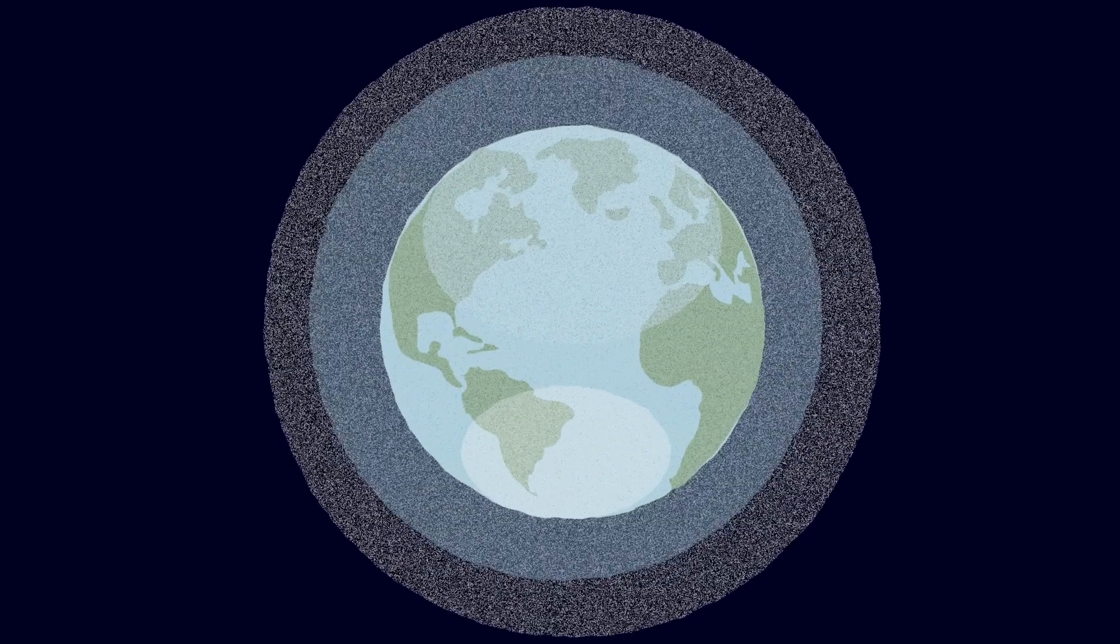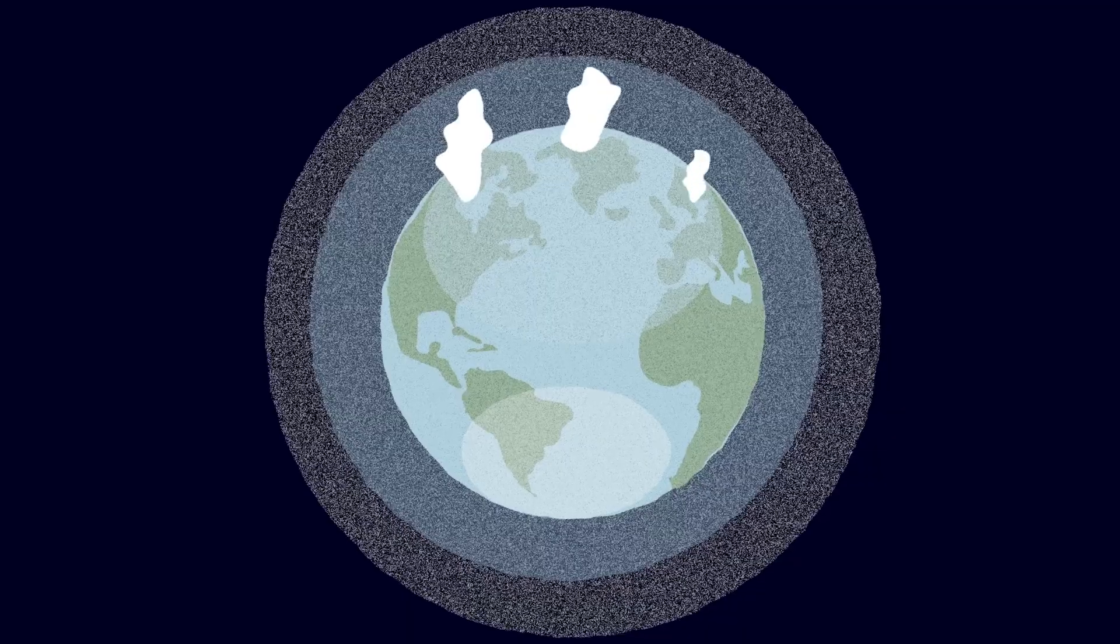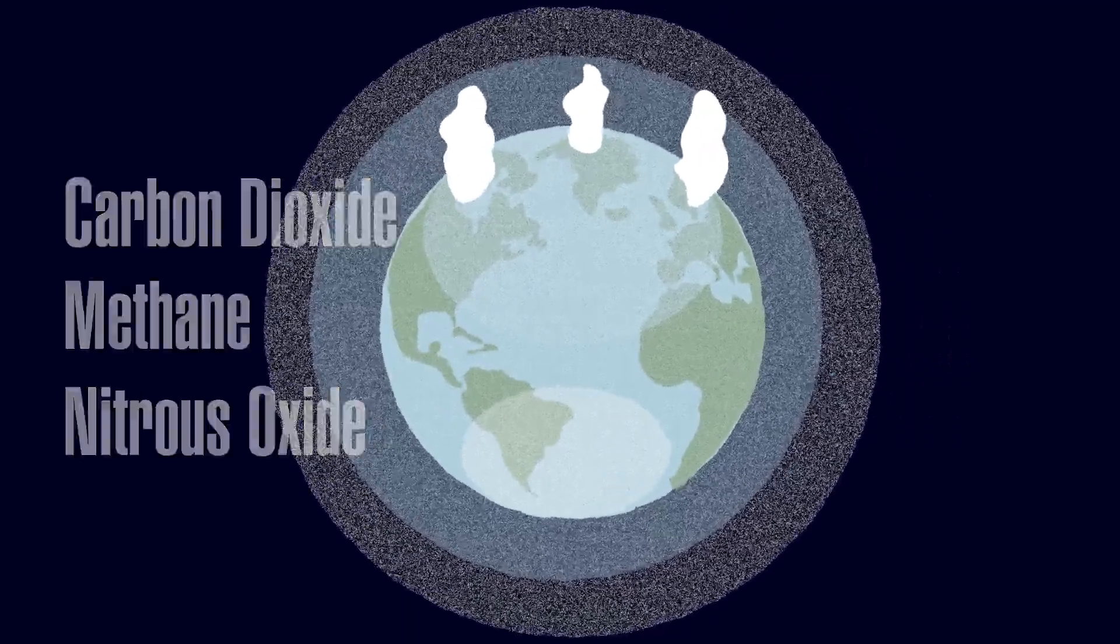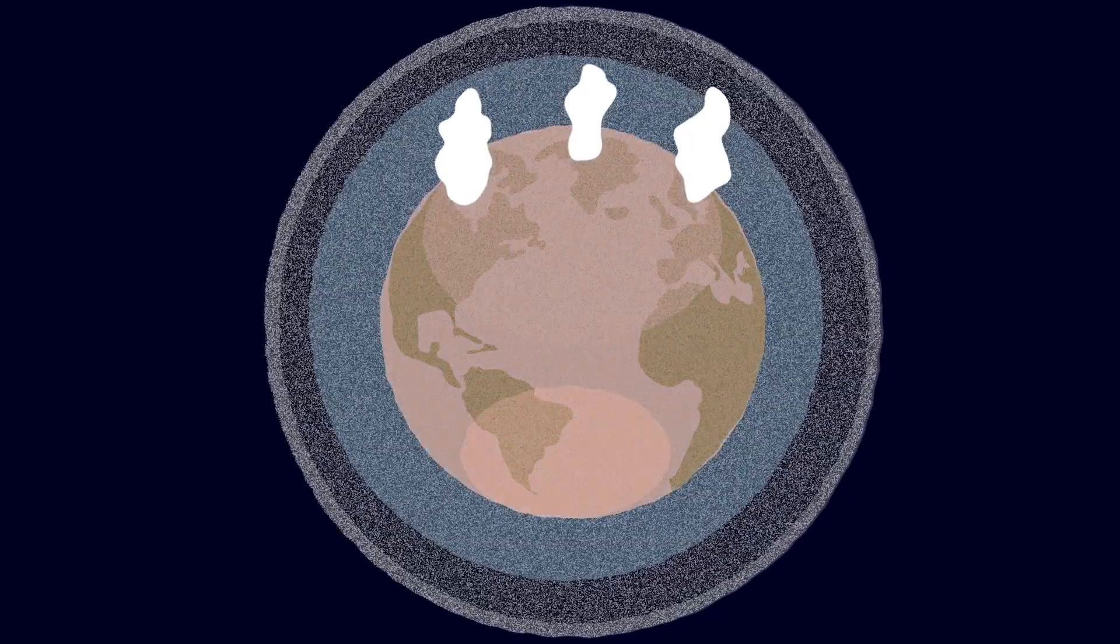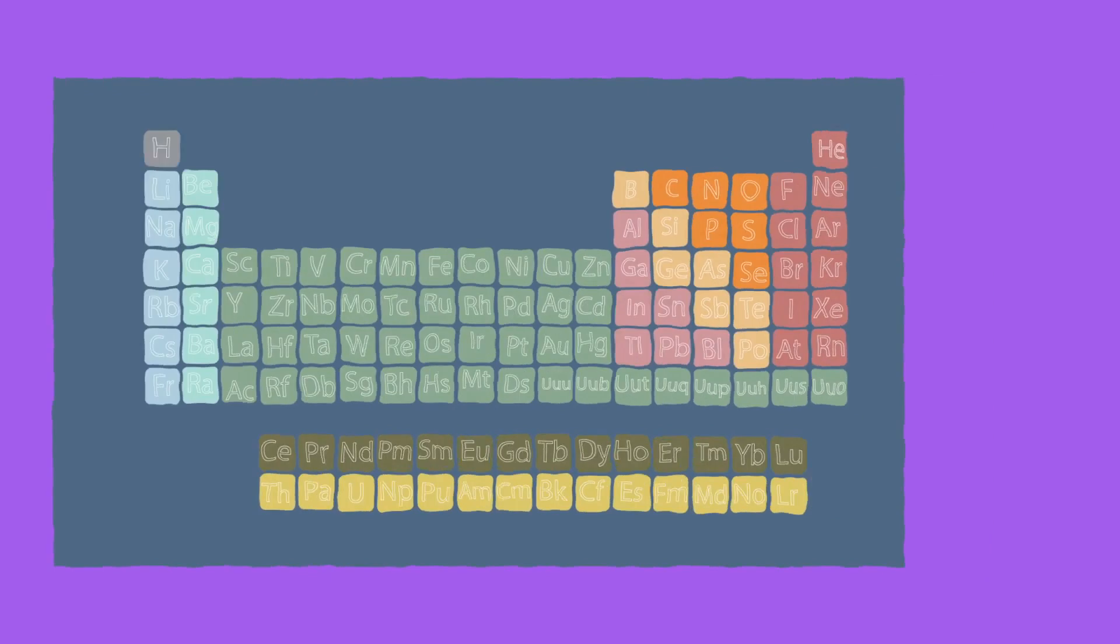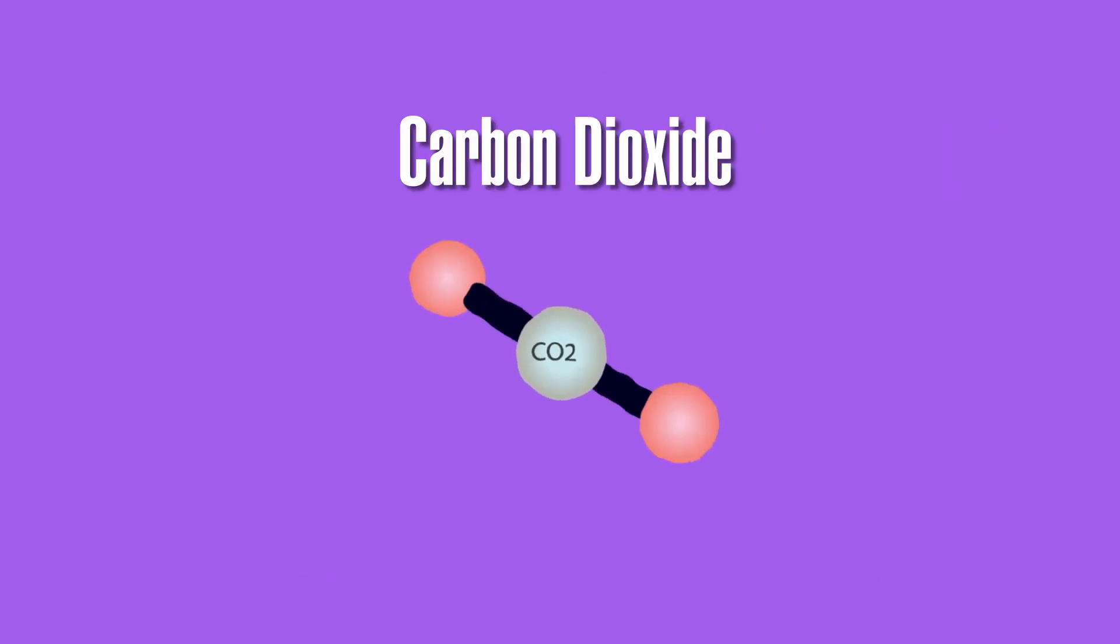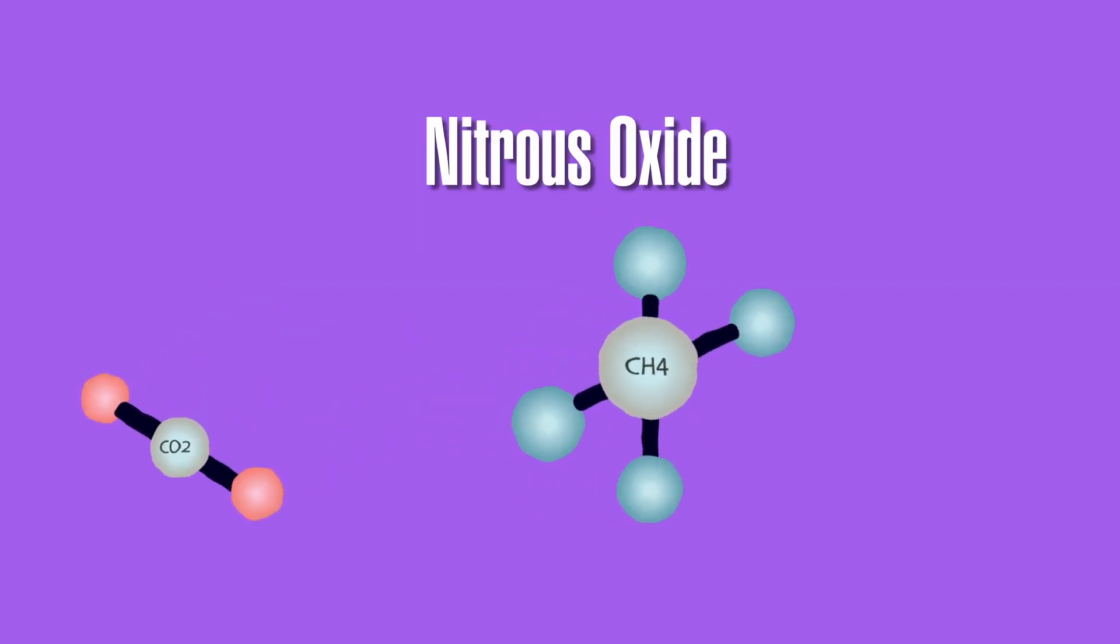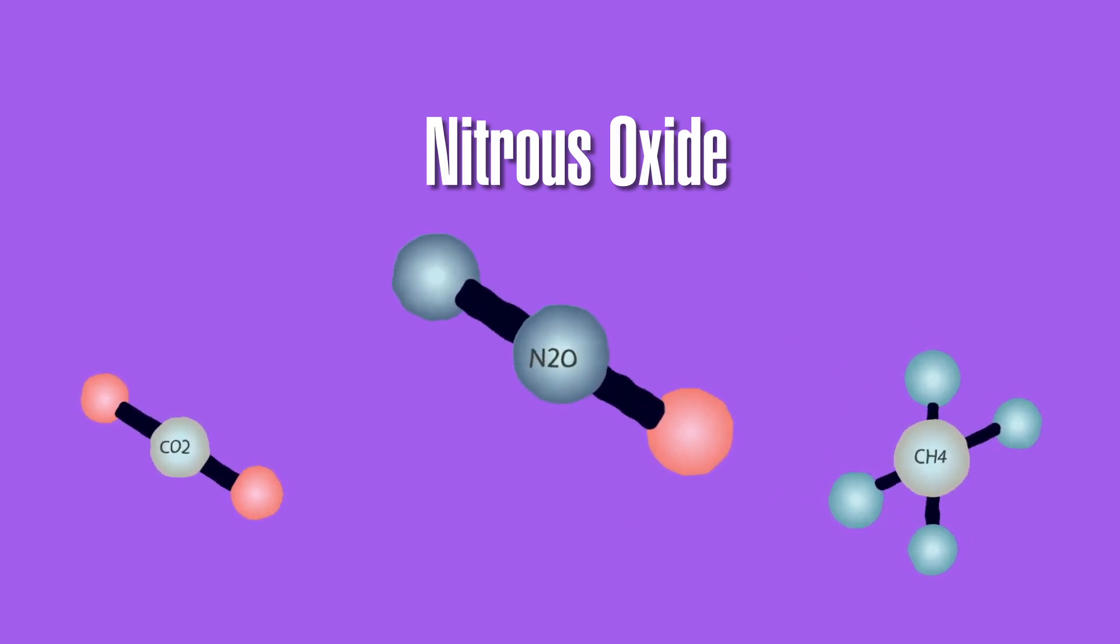Global warming is caused by a buildup of three primary greenhouse gases: carbon dioxide, methane, and nitrous oxide, which trap heat just like the glass of a greenhouse. To give you some more technical details, carbon dioxide is a chemical compound composed of one carbon and two oxygen atoms, CO2. Methane is composed of one carbon and four hydrogen atoms, CH4. And nitrous oxide is comprised of two nitrogen and one oxygen atoms, N2O.